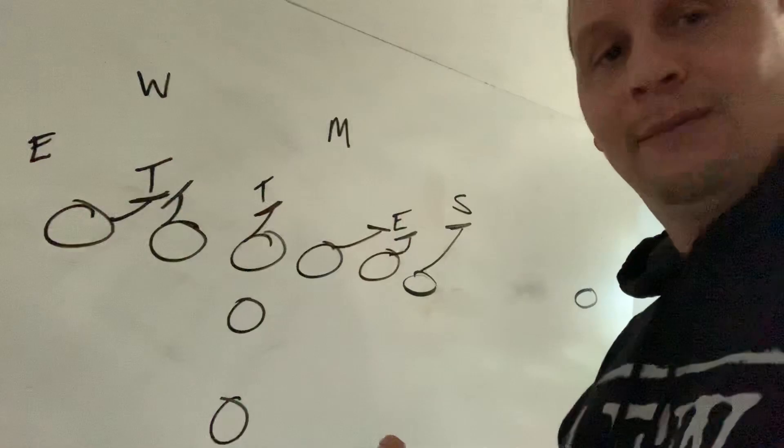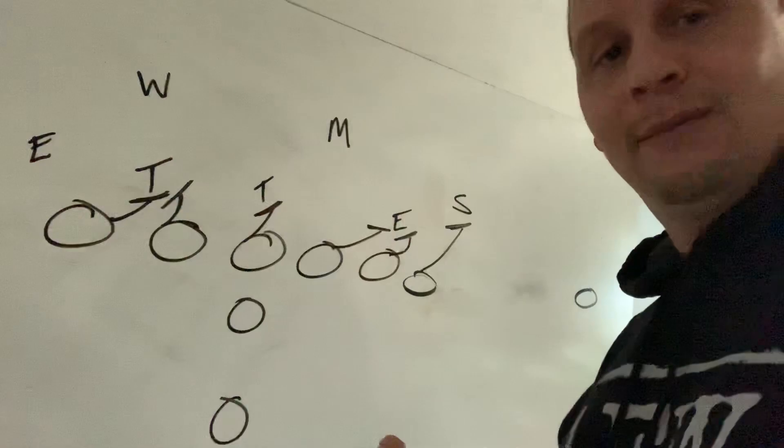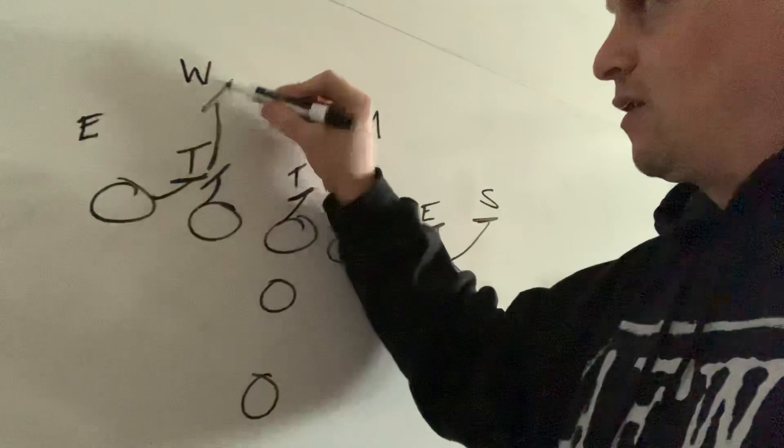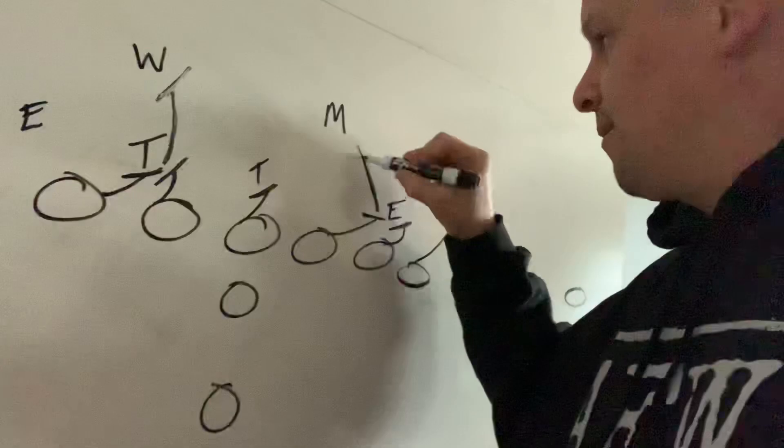One of these two linemen, and this is where the beauty of this thing works, one of these two guys will come off this double team. As you can see here, you've got the will. One of these guys will take on the will, and one of these guys will come off of this double team and take on the Mike. The tight end is going to take on Sam, strong side linebacker.